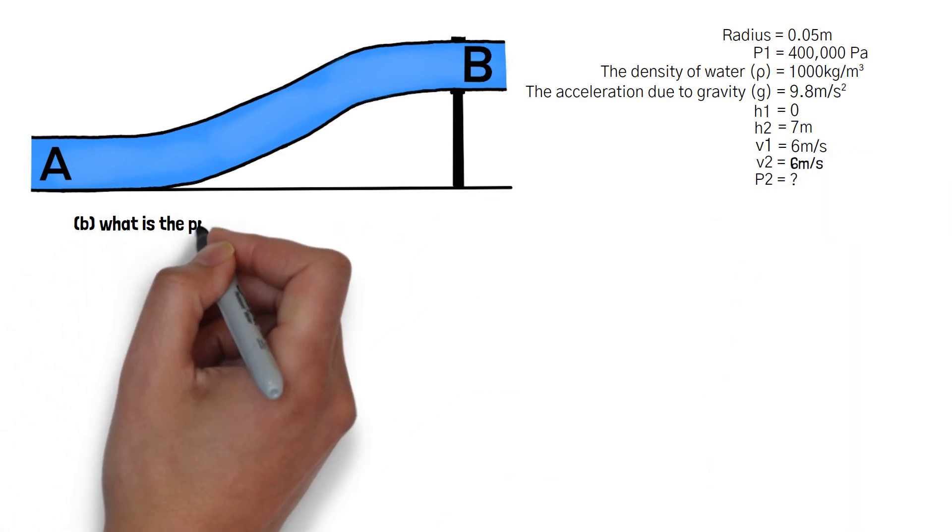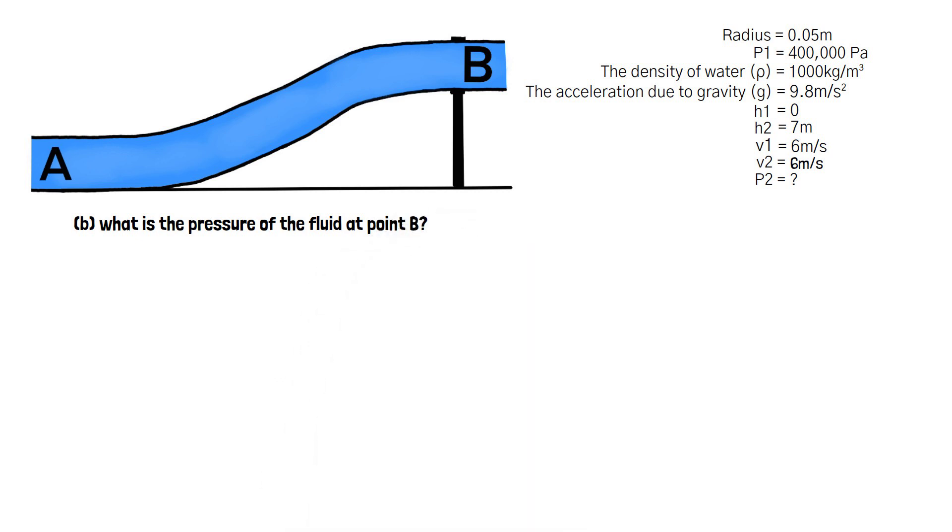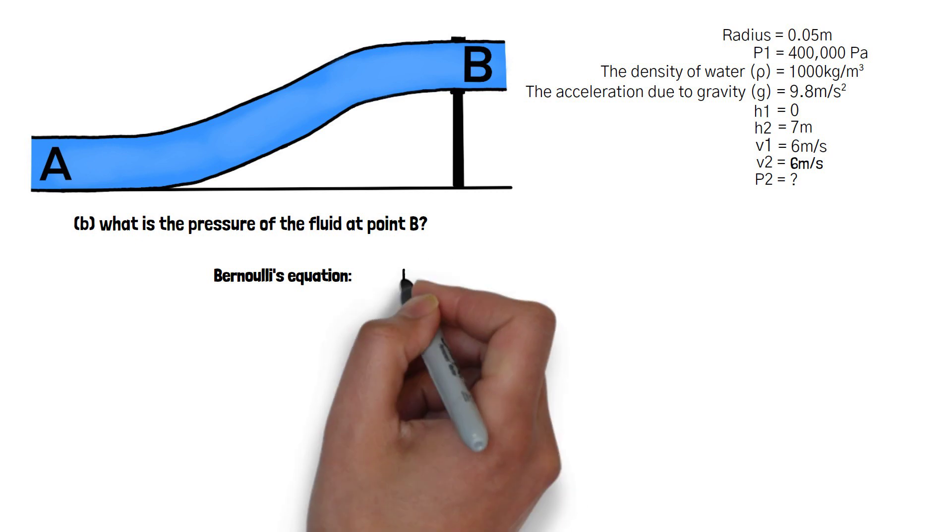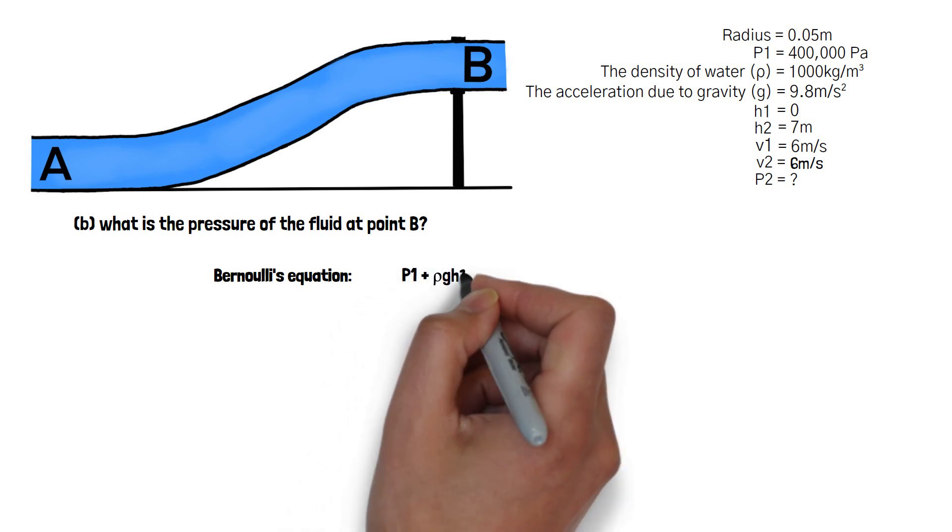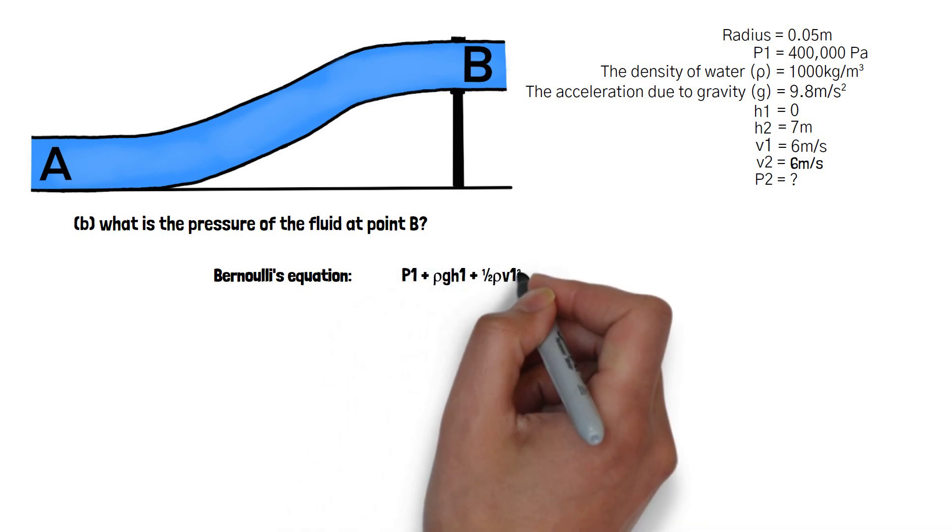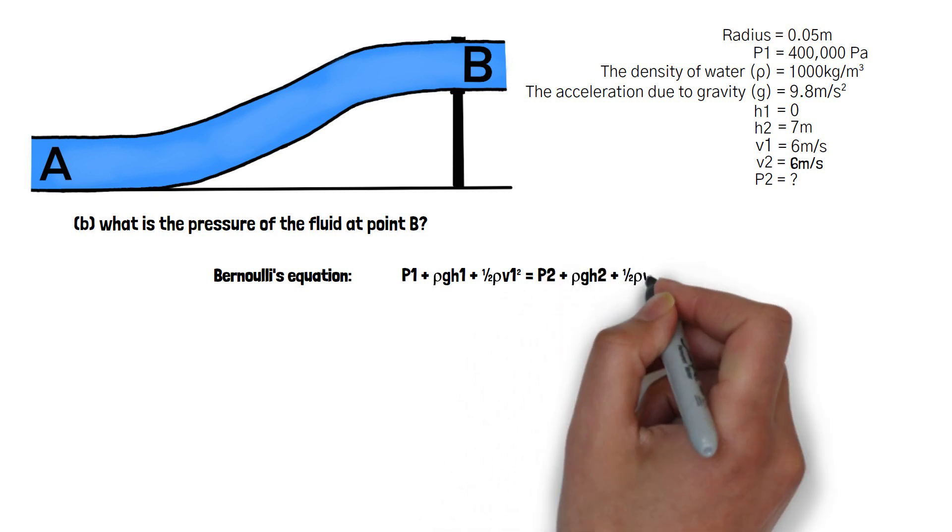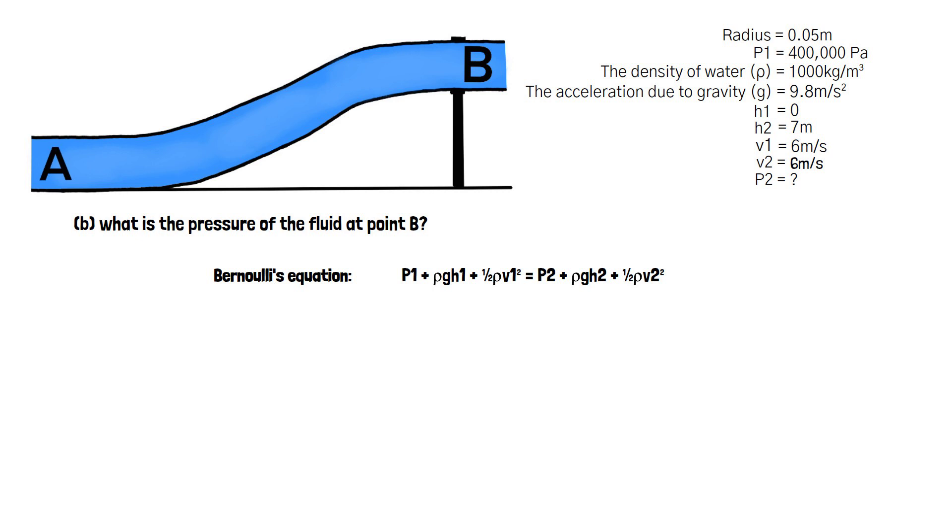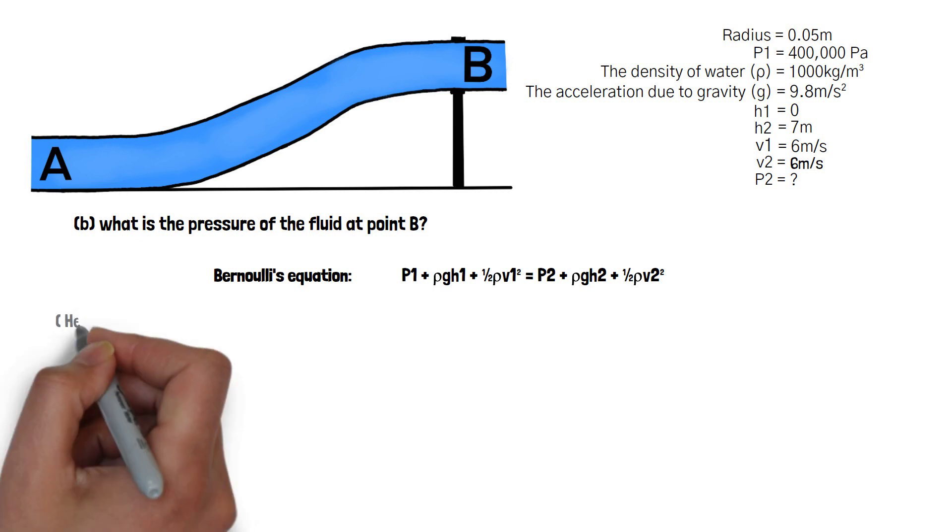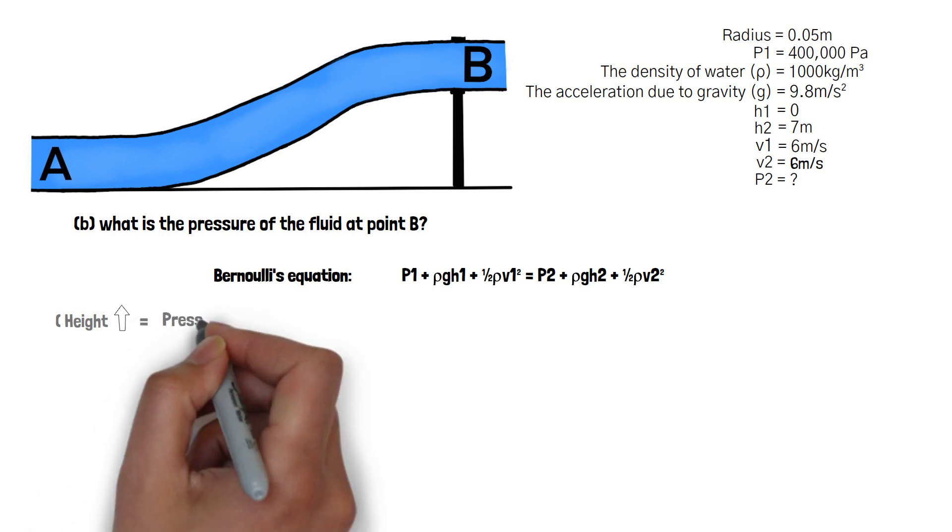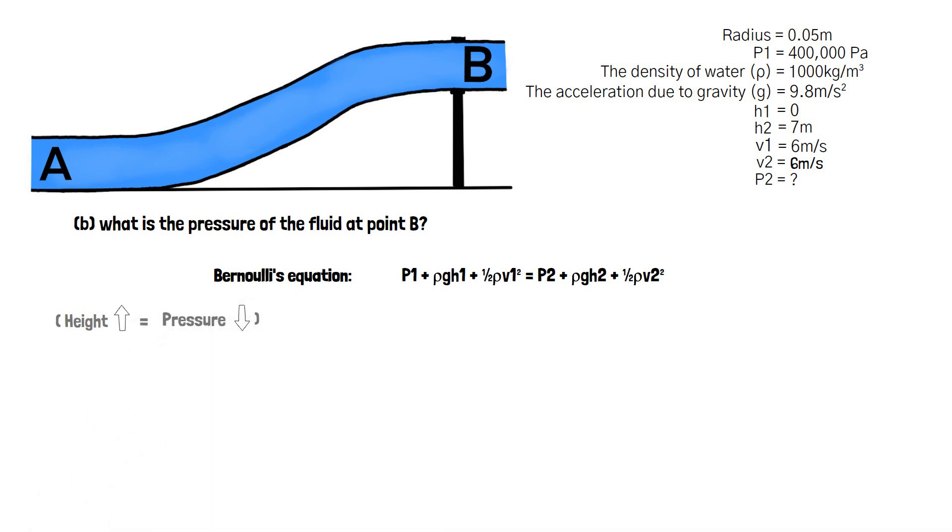Sub question B requires us to calculate the pressure of the fluid at point B. To do this we must use Bernoulli's equation shown on screen as P1 + ρgH1 + ½ρV1² = P2 + ρgH2 + ½ρV2². We must note that as the height of the pipe is increasing and an increase in height causes a drop in pressure, we must expect a lower pressure for P2 than we have for P1.